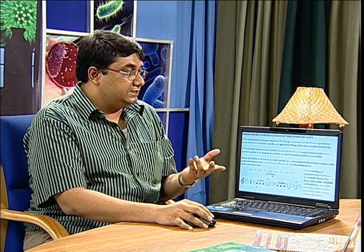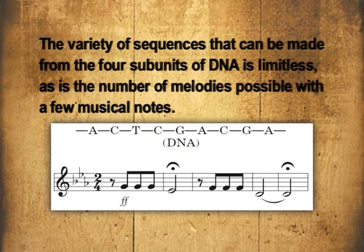For example, a DNA molecule is usually composed of four subunits: A, T, G and C. By permutation and combination, you can generate almost limitless possible sequences, and consequently these molecules can store enormous information - almost like the musical melodies that can be formed by very few musical notes.